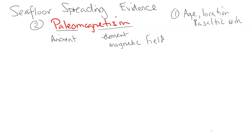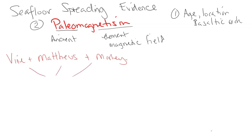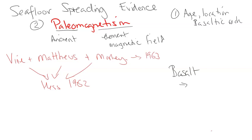Two researchers named Vine and Matthews, and also a gentleman named Morley — Vine and Matthews were English and Morley was Canadian — both did separate research on the same topic. They followed up on Hess; Hess published in 1962 and these researchers were working in 1963. Hess inspired these scientists to investigate the ocean floor in more detail and find evidence to prove that Hess's theory of seafloor spreading is actually true.